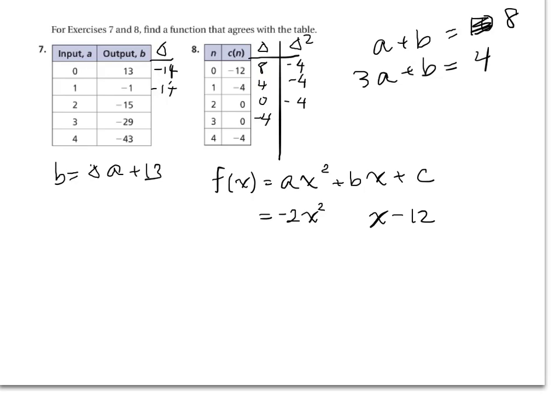We know A is negative 2 from earlier. Let's substitute: negative 2 plus B equals 8. Also, 3 times negative 2 plus B equals 4. Solving this, B equals 10. So the equation that matches this table is f(x) = negative 2x squared plus 10x minus 12.